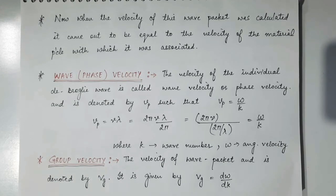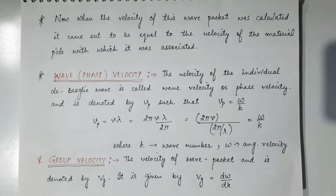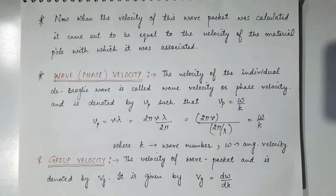When Schrödinger postulated that a group of waves is associated with the material particle instead of a single wave, the velocity of this wave packet was calculated and it came out to be equal to the velocity of the material particle with which it is associated. So now we will discuss about wave velocity and group velocity.